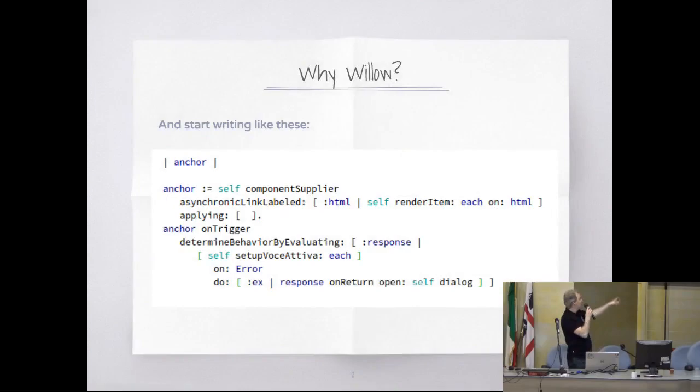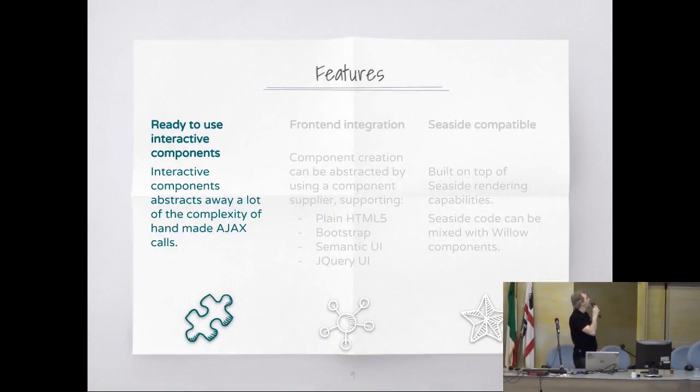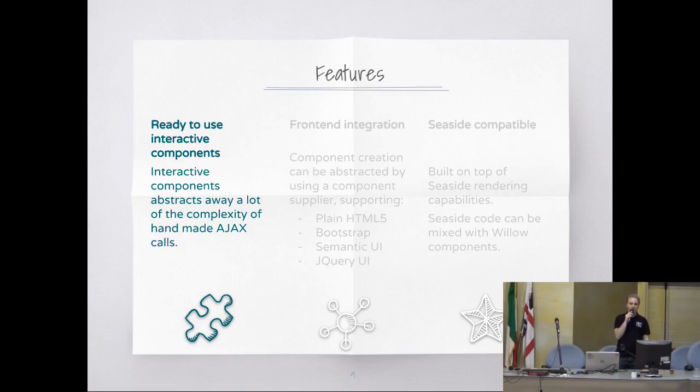This is the original code, and this is how you write it in Willow. Willow provides ready-to-use interactive components, so you can say: give me a button, give me an input, give me a list, a table — and you can use it to interact easily using AJAX-based code.